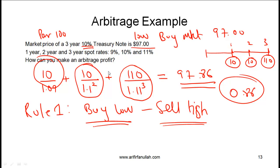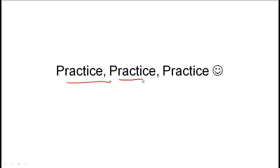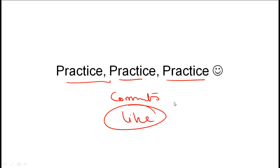In reality, if such an arbitrage opportunity arises, bond traders will pile in immediately, lots of buying takes place, the market price of the bond rises, and the arbitrage opportunity vanishes very fast. Because of this, these markets are generally fairly efficient. That covers this reading — practice hard, put your comments on YouTube, and if you like this video please click the like button.